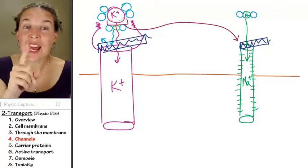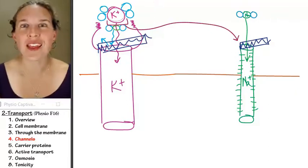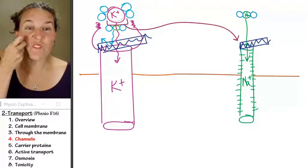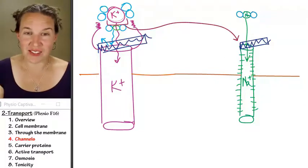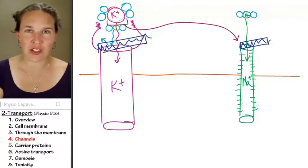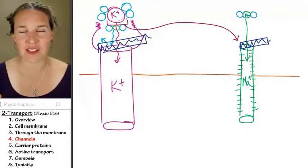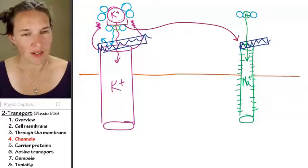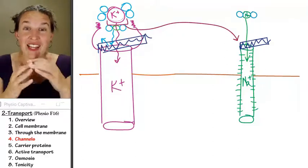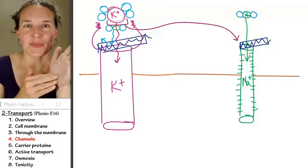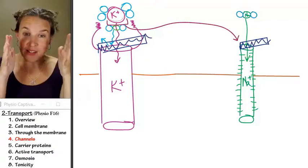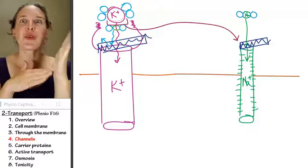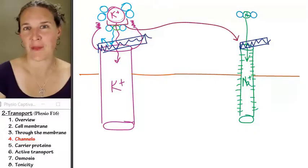Not only can you have gated channels, you can have gated channels that open depending on certain stimuli. So if you flick the channel, like apply a mechanical stimulus to the channel, you will actually open the channel. And then you can imagine you can get in, and we can actually send messages that way.